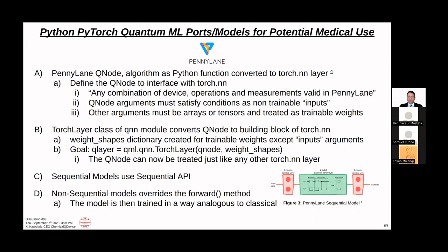If you're coming from a deep learning background, a lot of these terms - what's trainable, what's not, what gets updated over the course of the circuit - should be very familiar. TorchLayer class of QNN module converts QNode to a building block of Torch.nn. A weight shapes dictionary is created for the trainable weights. The goal is this one line: QLayer equals QML.QNN.TorchLayer, which has the QNode containing the circuit and the weight shapes. The QNode can now be treated just like any other Torch.nn layer since it's in QML.QNN.TorchLayer format.